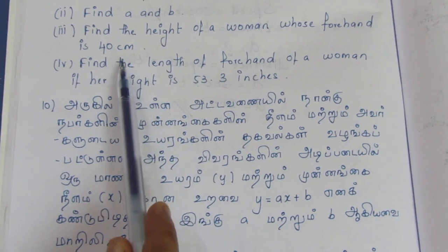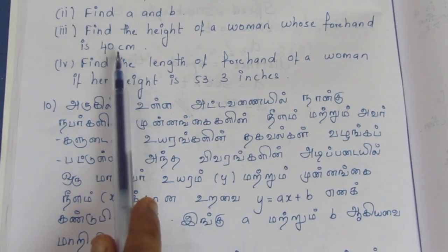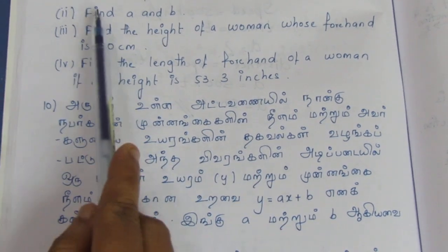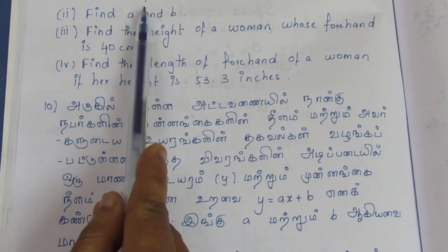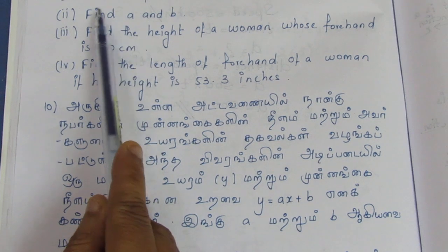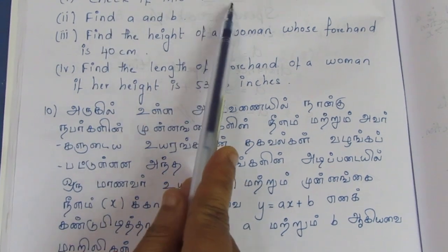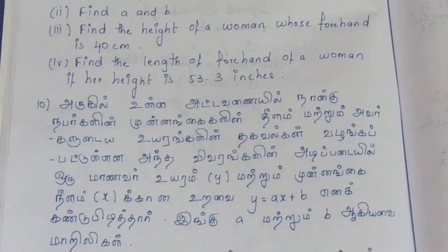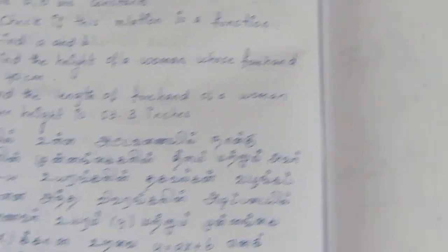First question: check if the relation is a function. You can see the answer in the table. If you write a domain or codomain, you can identify the mapping.